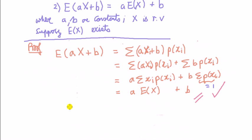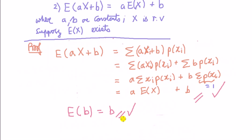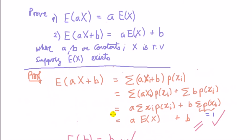Notice also, in doing this proof, we have kind of really shown that the expected value of a constant is a constant. So that's the proof — two proofs — of the expected value of ax plus b is equal to a times the expected value of x plus b.